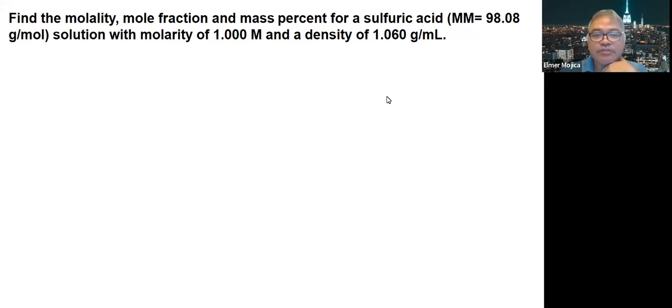Okay, so let's solve this problem. Find the molality, mole fraction, and mass percent for a sulfuric acid with molar mass of 98.08 grams per mole. Given a solution with molarity of 1.00 molar and a density of 1.06 grams per mL.